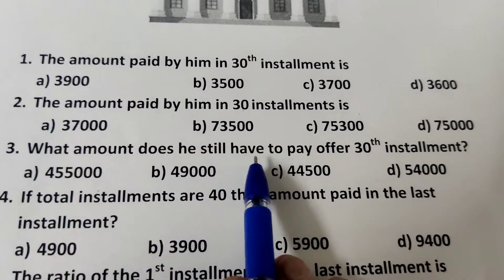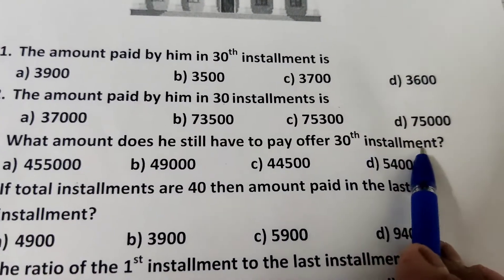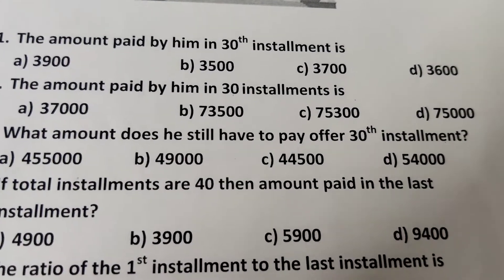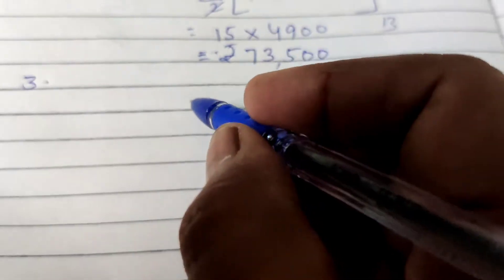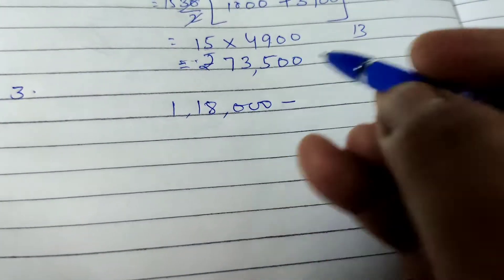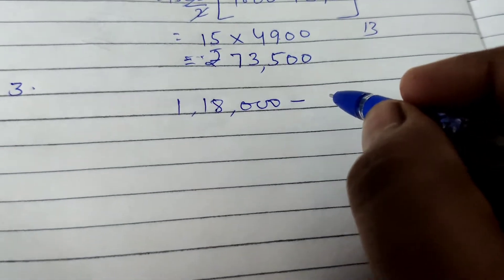Next, what amount does he still have to pay after 30th installments? How much amount does he still have to pay? Total loan amount is 1,18,000. Minus. How much has he paid?